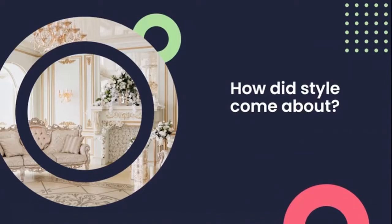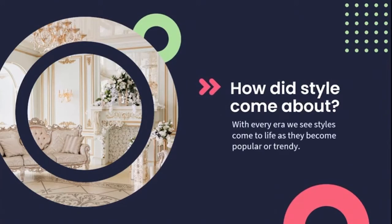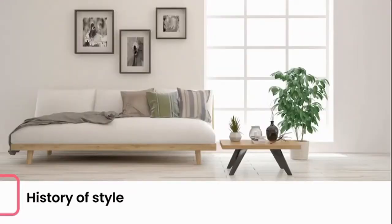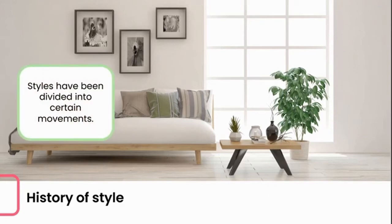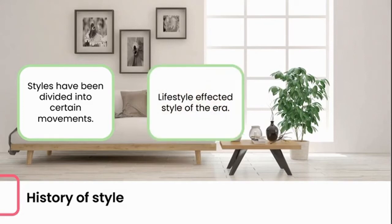A really important question: how did style come about? For as long as the interior design industry has been around, style has governed and mapped the way we as designers produce our work. With every era, we see styles come into life as they become popular or trendy. They then become mainstream of that particular era and then fade into the shadows as they become less trendy. During our history of interior design, styles have also been divided into certain movements where lifestyle, culture, and daily life affect or influence the style of that time. This is less about trend and more about the need and functionality of that style. As style progressed, so did the trend, which assisted in the rapid growth of style to this day.